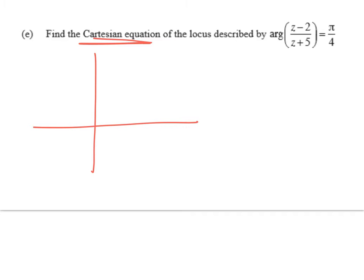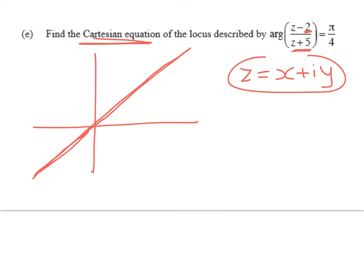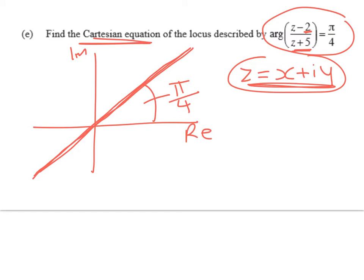A key bit of information here is that we're looking for some complex number z, and we'll write it as x plus iy because that's all we know about it. And when we take that z, take off 2 and divide it by z plus 5, we're looking for all those points where that quotient will lie on this line here where the angle is pi on 4.